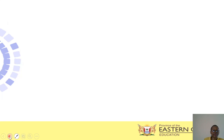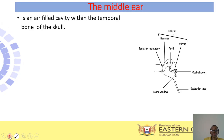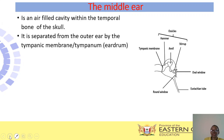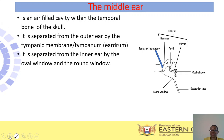Moving to the middle ear. Your middle ear is air-filled and it occurs within the temporal bone of the skull. The tympanic membrane separates the outer ear from the middle ear. The common name for the tympanic membrane is the eardrum. Your middle ear is also separated from the inner ear by two windows: the oval window and the round window.